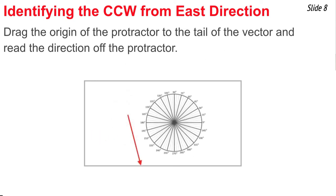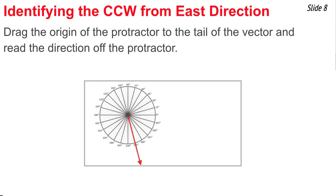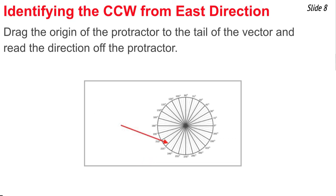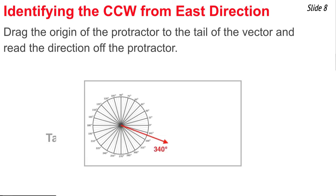This protractor is just perfect for reading the direction of vectors, because zero degrees is set up with east, and all the other directions are counterclockwise angles of rotation from east.